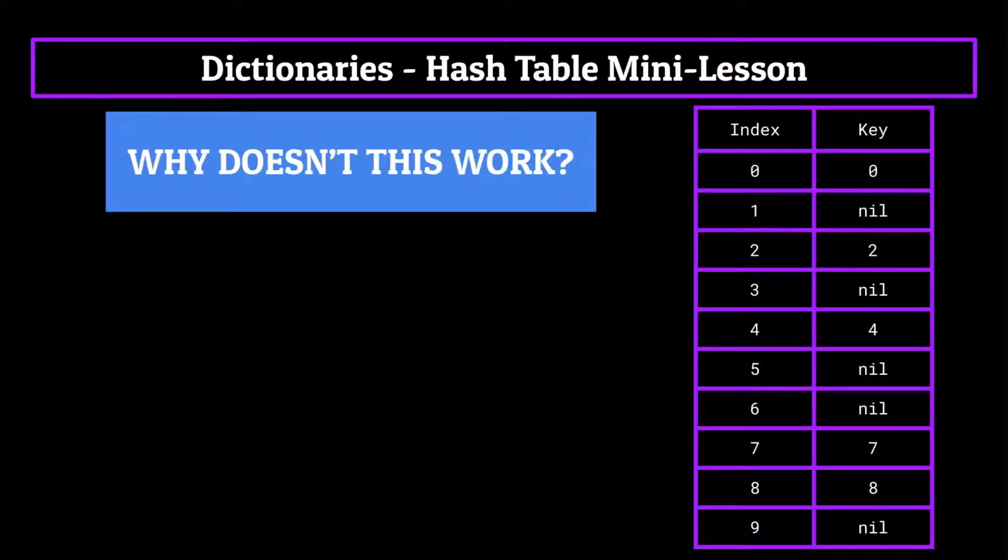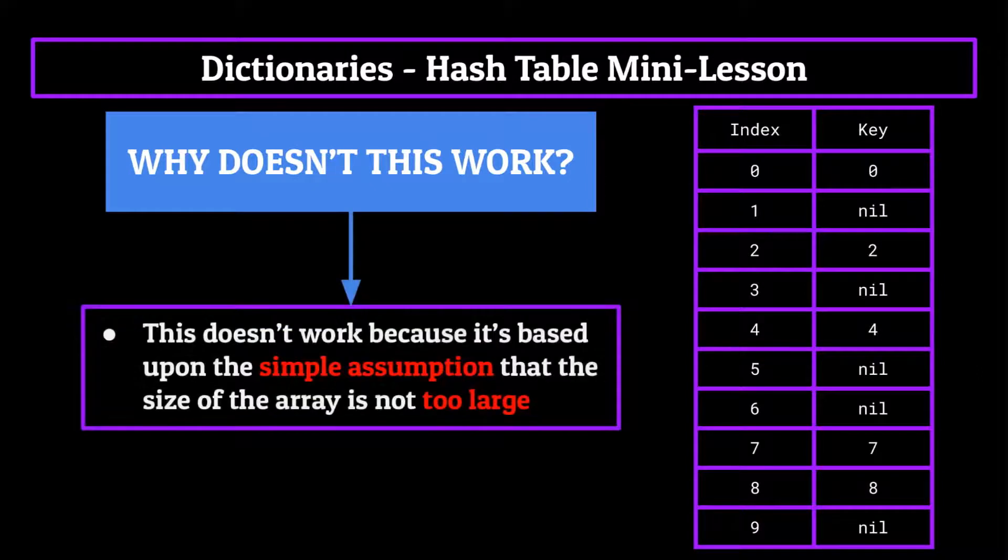Why does this not work? Why can't we just use an array like this to back our dictionary in memory, since it looks like everything would run in constant time since all the keys correspond to their table values in memory? Well, this isn't actually the case, because it's based upon the simple assumption that the size of the array is not too large.